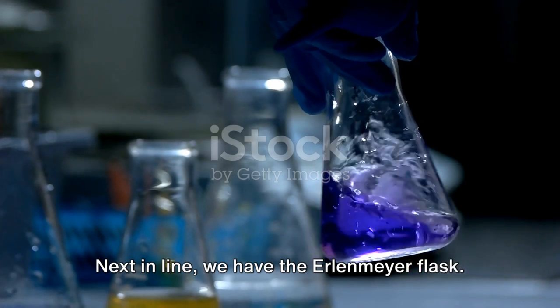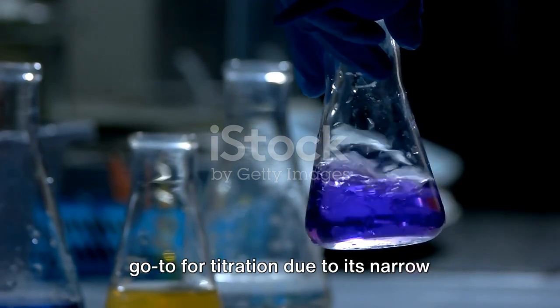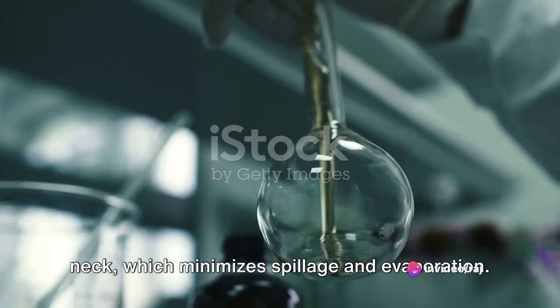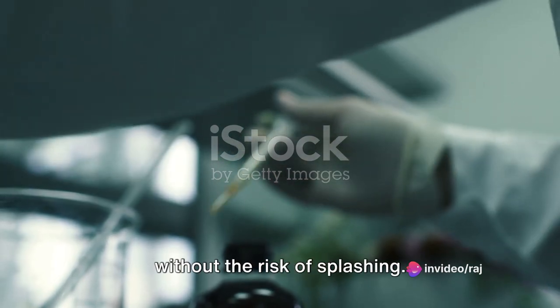Next in line we have the Erlenmeyer flask. This conical piece of glassware is a go-to for titration due to its narrow neck, which minimizes spillage and evaporation. It's also fantastic for swirling mixtures without the risk of splashing.